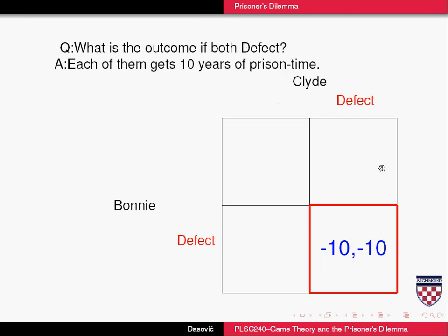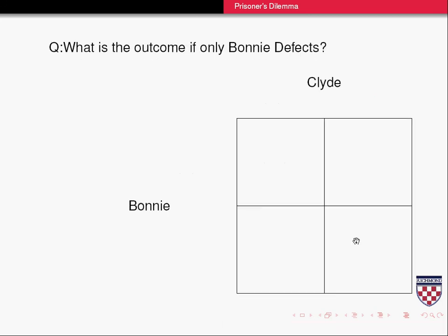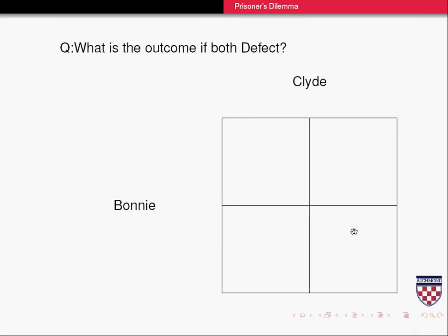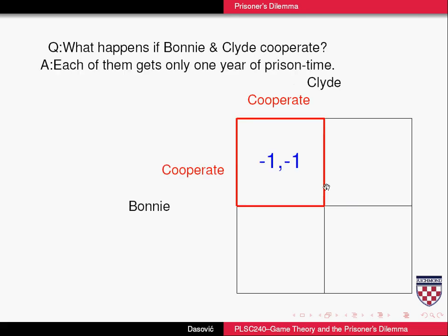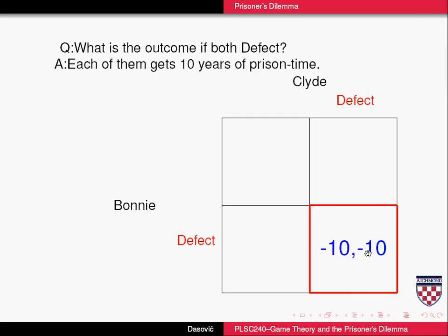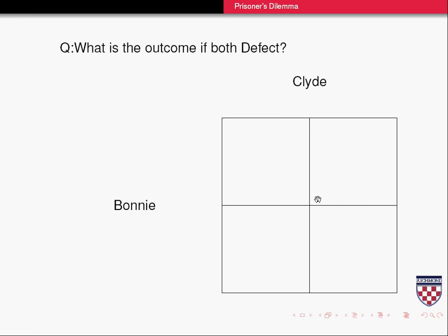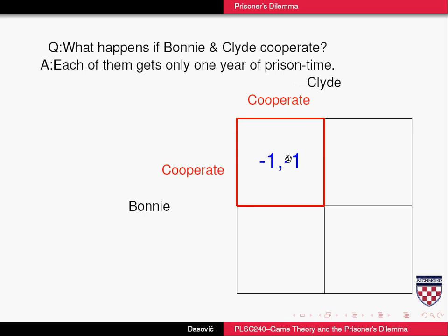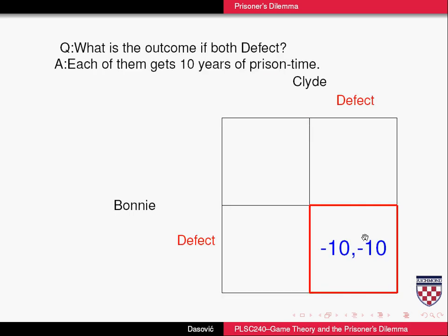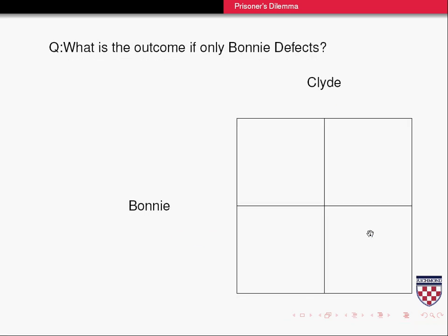What if they both defect? Well, they'll get 10 years in jail each. It's obvious that they'd prefer to both cooperate, because that's a total of two years in jail time, compared to a total of 20 years in jail time if they both defect.